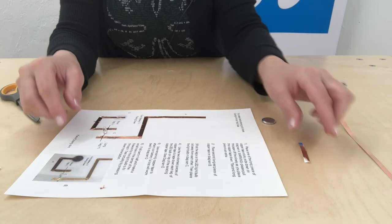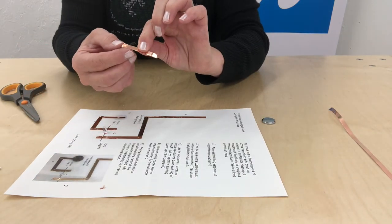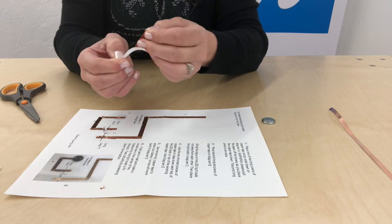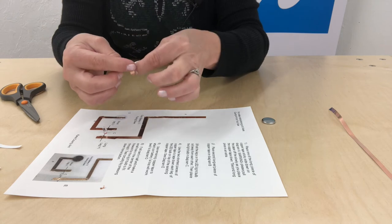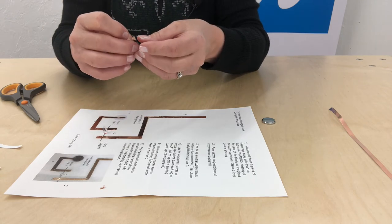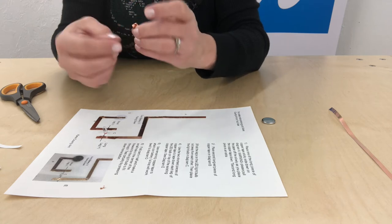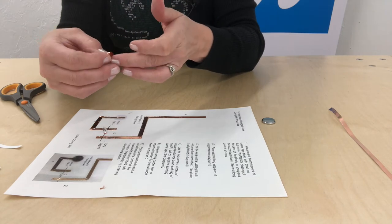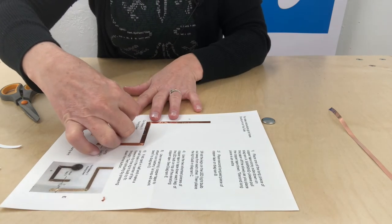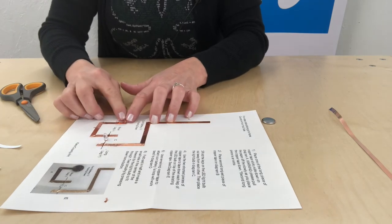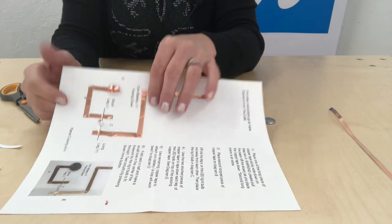You're almost finished. Now, you have one more short piece of copper tape. We're going to use this to make a loop of tape to hold our battery in place. I'm going to peel that off. I'm just going to make a little loop here with my copper tape, just like that. I'm going to place it on top of the existing copper tape on the diagram where it shows the battery goes.